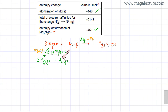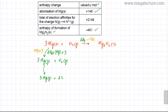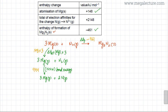The next step is breaking the bonds in the nitrogen molecule. Nitrogen has a triple bond, so breaking it forms two gaseous nitrogen atoms. The bond energy for the N≡N bond can be found from the data booklet and is equal to 944 kJ/mol. In this step, the N₂ molecule gets converted into gaseous nitrogen atoms.